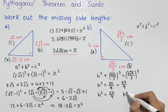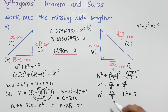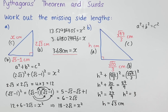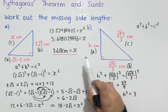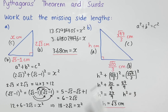Square-rooting both sides, h = √3 centimetres. So we've worked out the two missing side lengths of both triangles using Pythagoras' theorem involving surds.